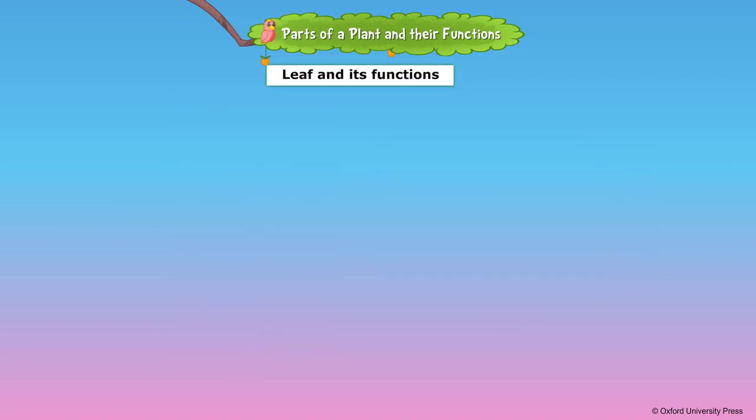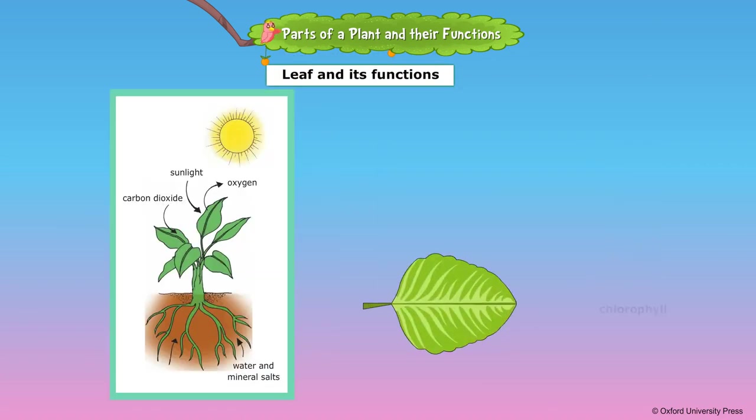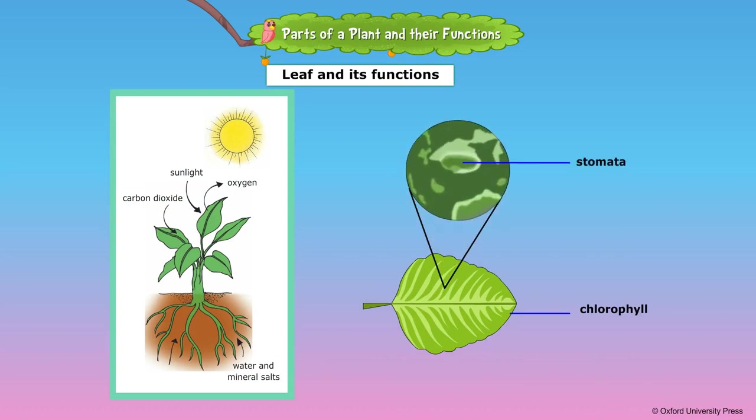Leaves are the green parts of a plant. A green substance called chlorophyll found in the green leaves uses sunlight and prepares food for the plant. The plants breathe through the tiny pores called stomata present in the leaves.